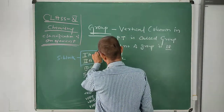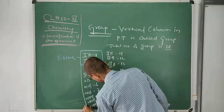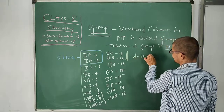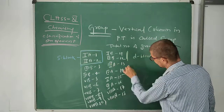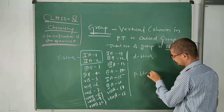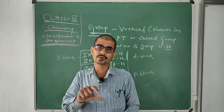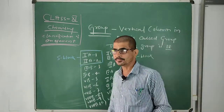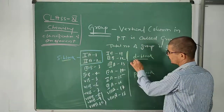S block means group first A and second A. Now, 3B to 2B is called D block elements. Group 3A to 8A, or 13 to 18, is called P block elements. In the modern periodic table, at the bottom side, two series — lanthanoids and actinoids — are separately given; that is called F block. So in this way the entire periodic table is divided into four blocks: S block, P block, D block, and F block.